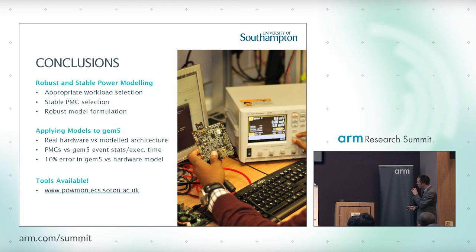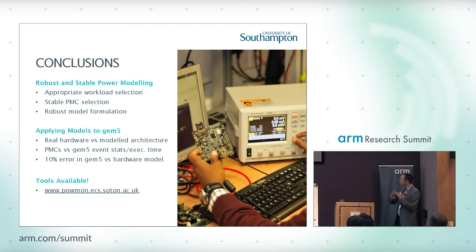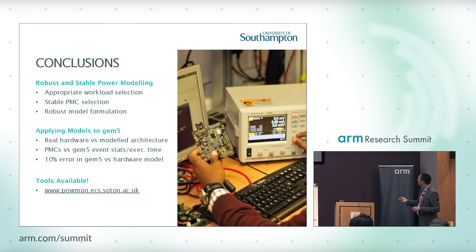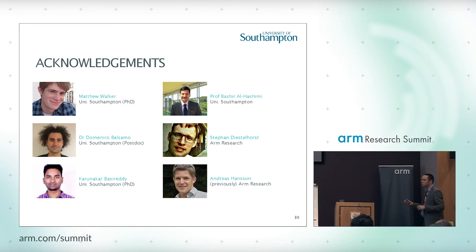So to summarize, there are two parts: the power modeling methodology itself — picking the right workloads, selecting performance counters, building a model that is a closer representation of hardware — and then applying those to Gem5. The tools are available, and credit goes to Matt Walker, whose PhD this is, and he has a poster this evening and tomorrow. If you have really nasty questions, I suggest you go and ask him instead. That's all I've got to say, and I'm happy to take questions.